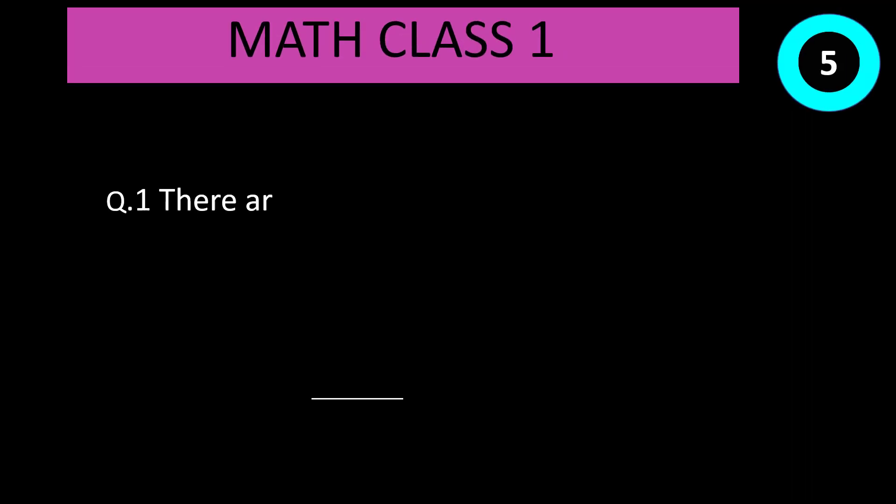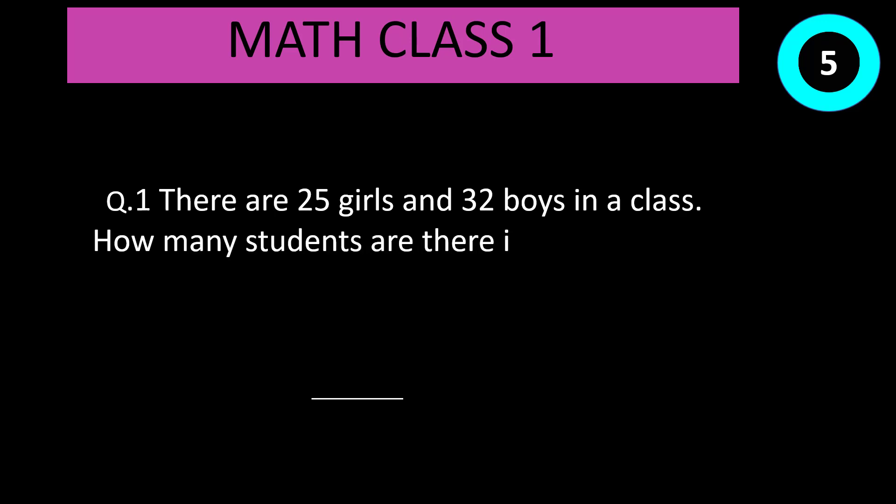Question number 1: There are 25 girls and 32 boys in a class. How many students are there in all? Time start now. Correct answer is 25 plus 32 equal to 57.